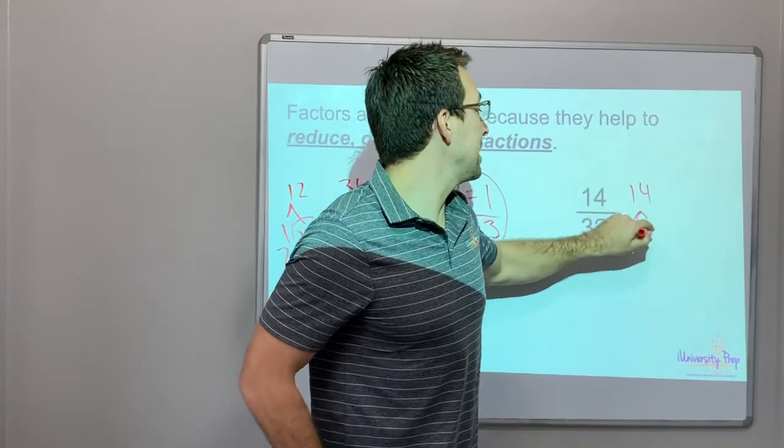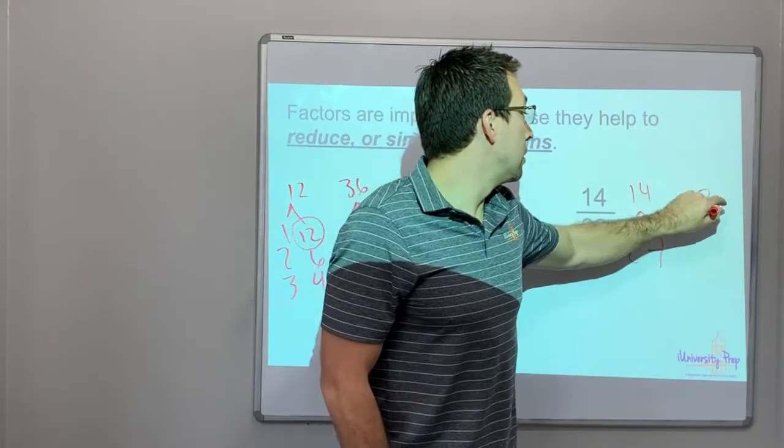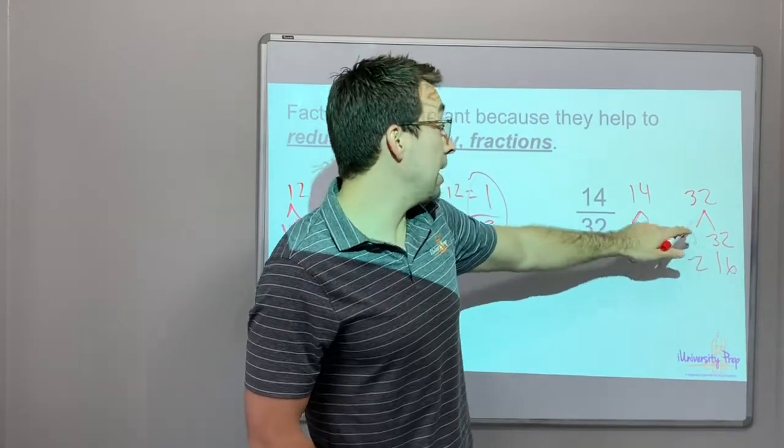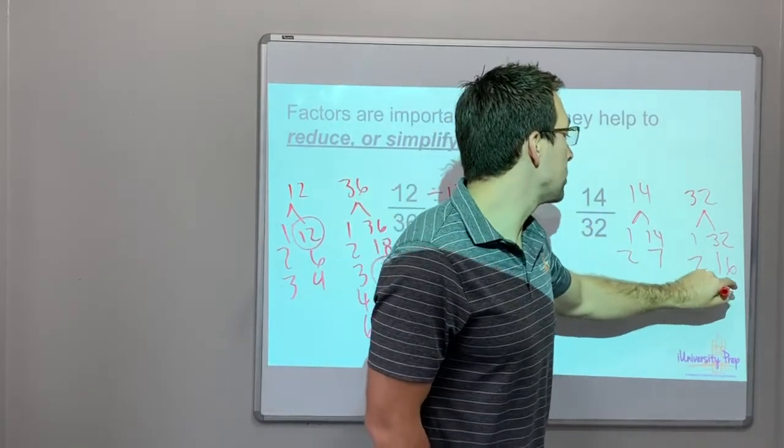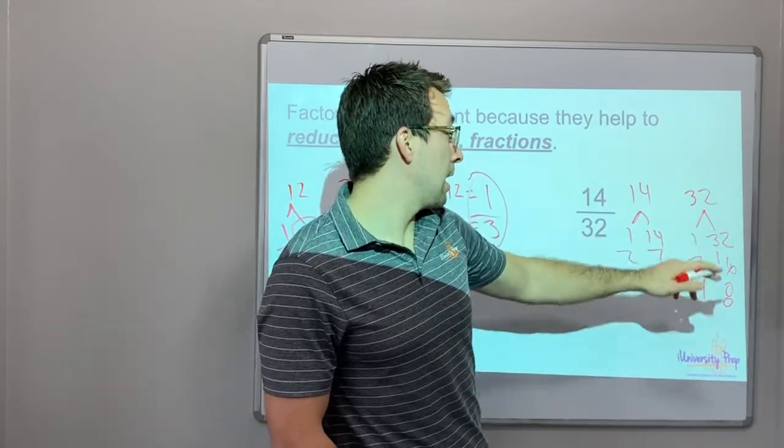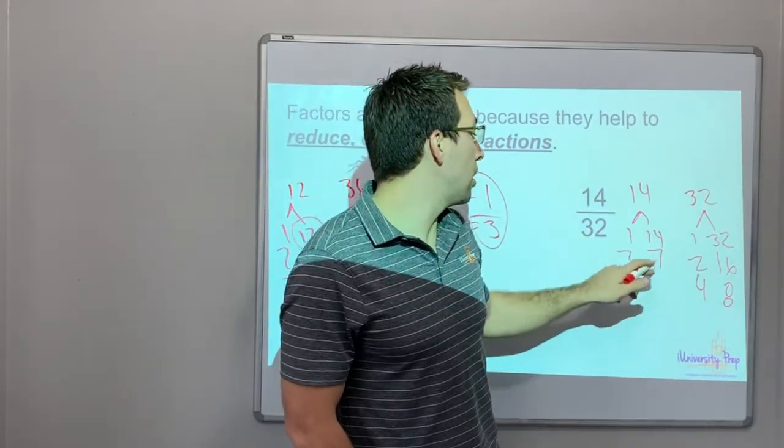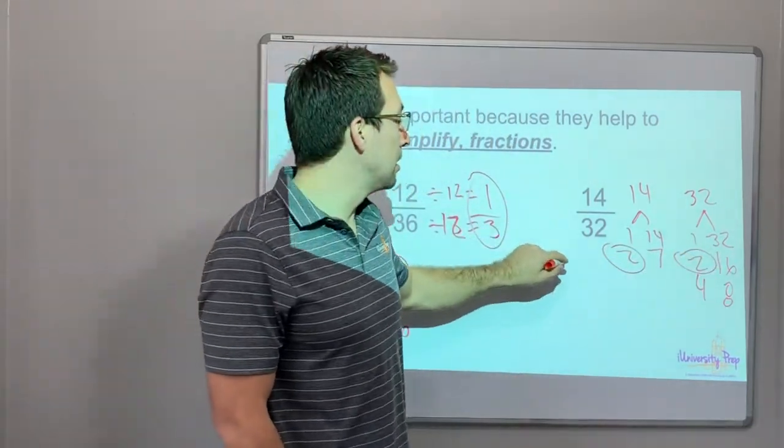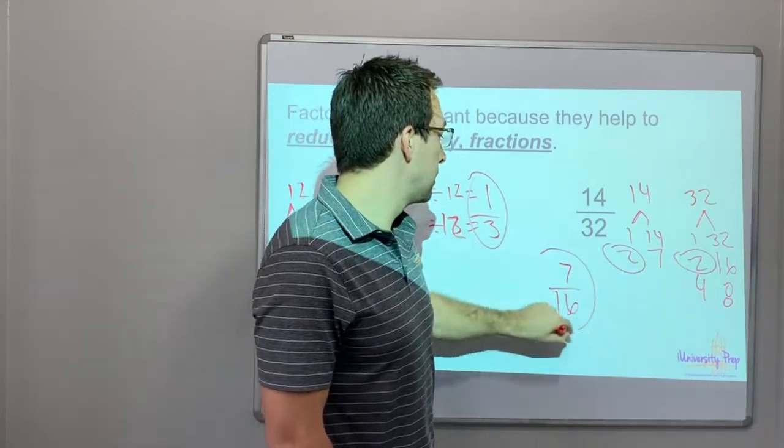So 12 over 36 is the same as 1 over 3. You have to have greatest common factor. You have to be able to find the greatest common factor to simplify and reduce a fraction. So let's do 14. 1 times 14, 2 times 7. That's it. 32. 1 times 32, 2 times 16. 3, no, because 3 times 10 is 30. 4 times 8, that's correct. 5, 6, 7, 8, no, that's it. So what is our greatest common factor? 2 is our greatest common factor. So watch this. Divide 14 by 2, that's 7. Divide 32 by 2 is 16. 7 sixteenths.